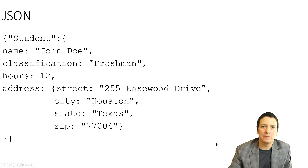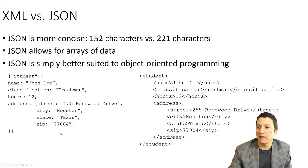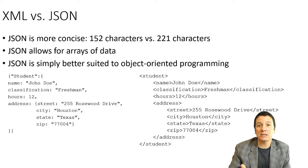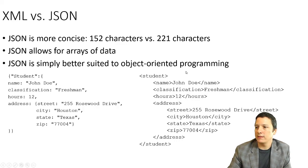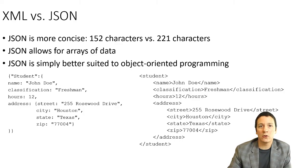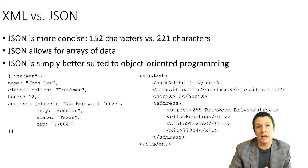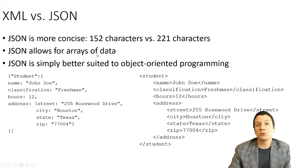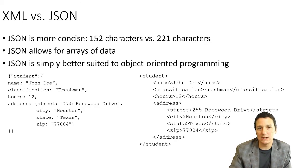Looking at JSON and XML side by side, one thing you'll probably notice right away is that the JSON document is more concise — about 152 characters compared to 221 in the XML document. There's simply less to store and transfer over the network. JSON also allows for arrays of data, whereas XML does not, and the JSON format is better suited to object-oriented programming — it's easier for an object-oriented language to parse JSON than XML, which is why we often see JSON used in these types of applications.